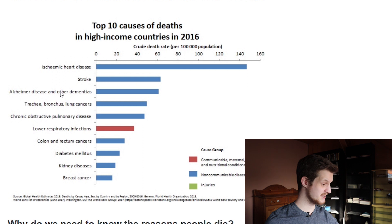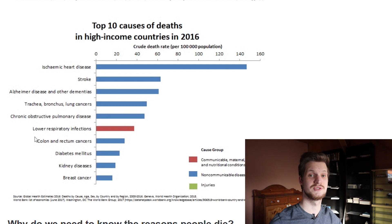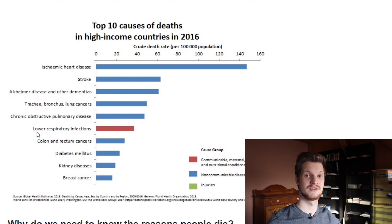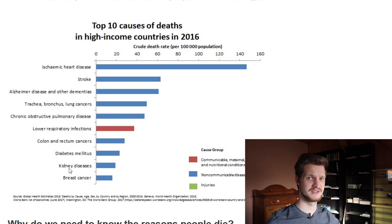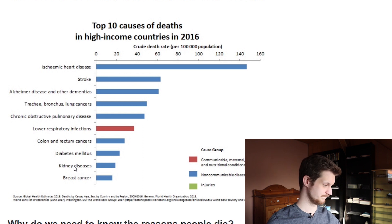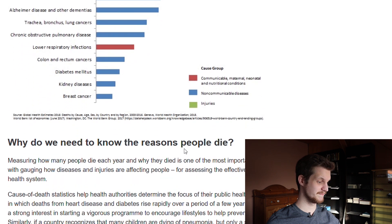Colon and rectal cancers are now inside the top 10 for high-income countries, which is interesting and may be due to these countries eating much more meat — especially red meat, which is a known risk factor for colon cancer — as well as access to frozen and processed foods. Breast cancer is also notable, along with kidney diseases, which go hand in hand with diabetes mellitus, as many kidney pathologies may be due to diabetes.